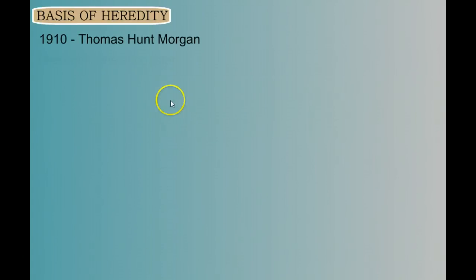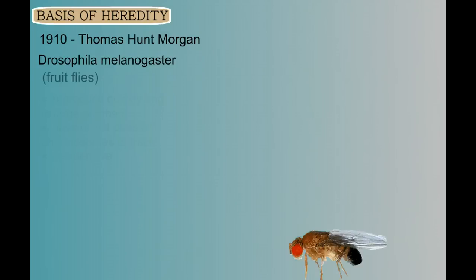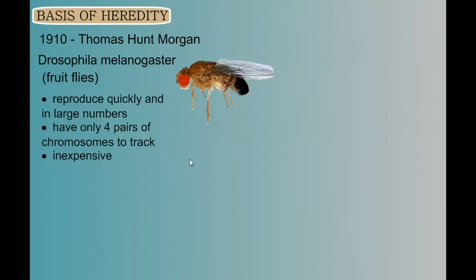In 1910, Thomas Hunt Morgan was studying genetics using Drosophila melanogaster — the common fruit fly. The reason why we use fruit flies to do genetic research is that they reproduce quickly and in large numbers, they only have four pairs of chromosomes to track, and they're inexpensive and easy to work with.